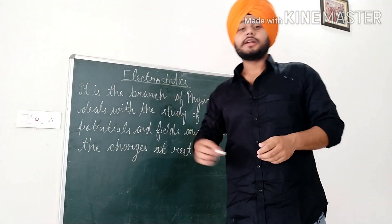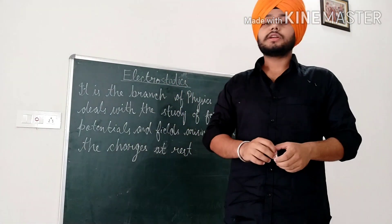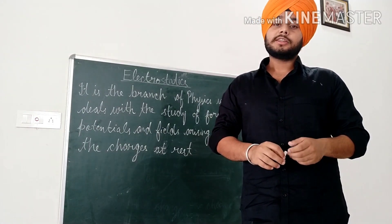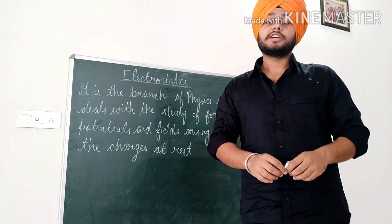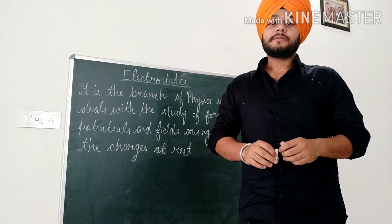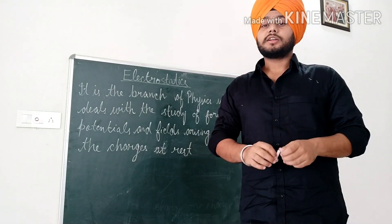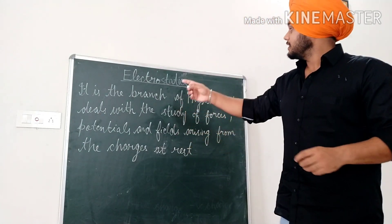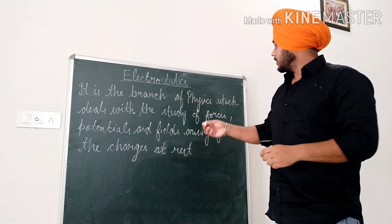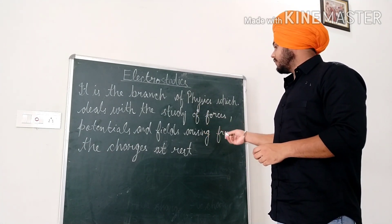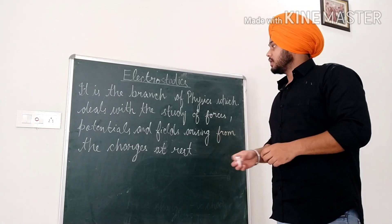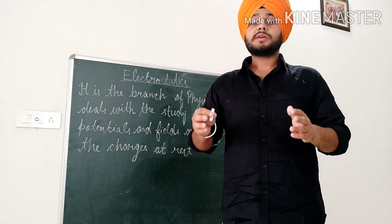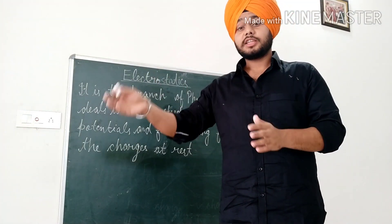First of all, physics is the first position of Kuala Jamit sir. This is the first unit named Electrostatics — a branch of physics which deals with the study of forces, potential, and field arising from the charges at rest.